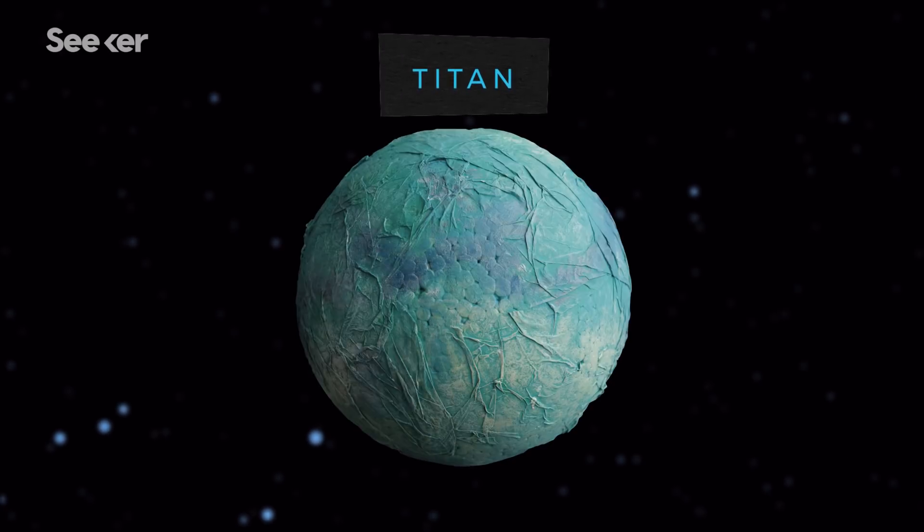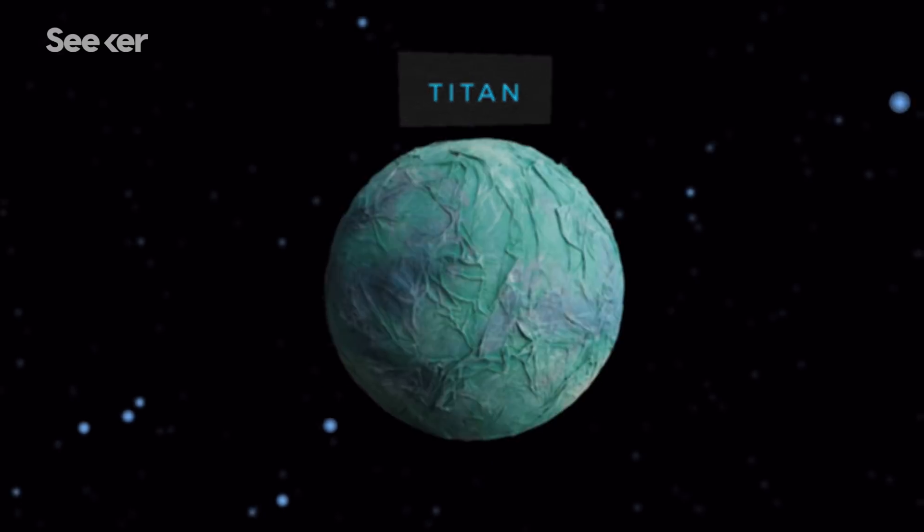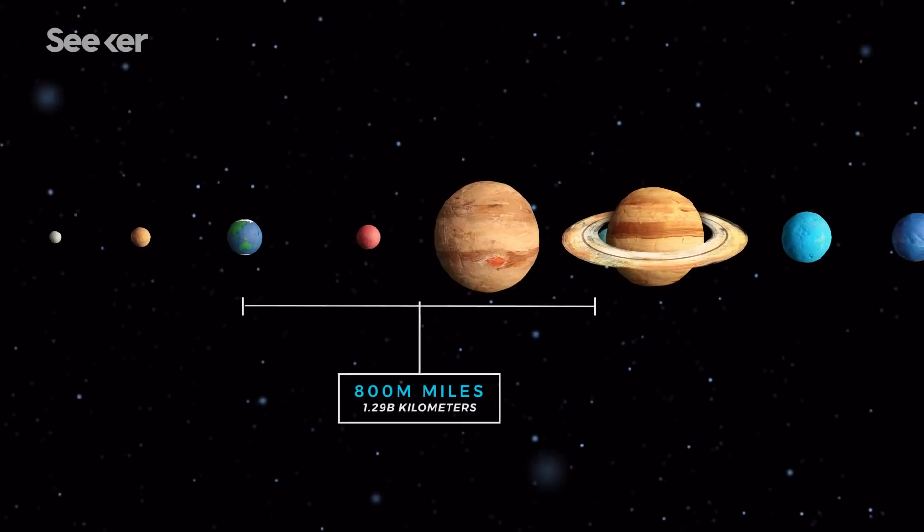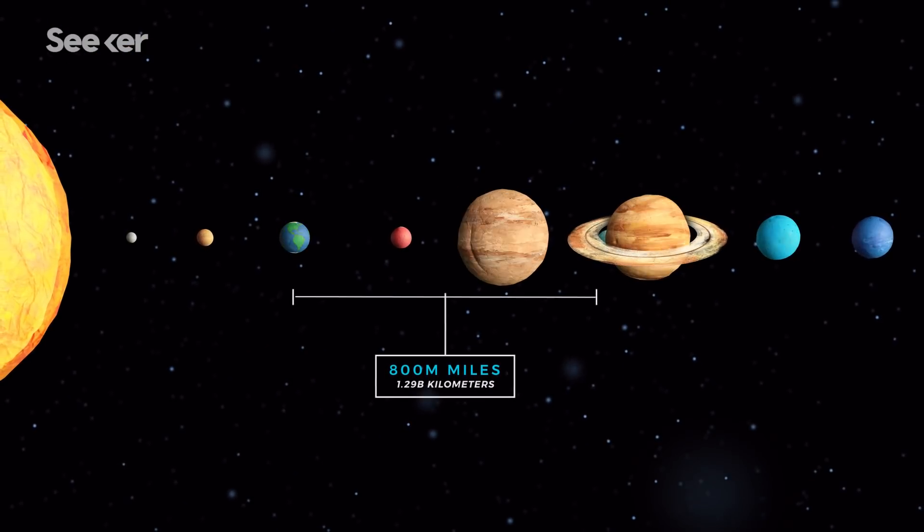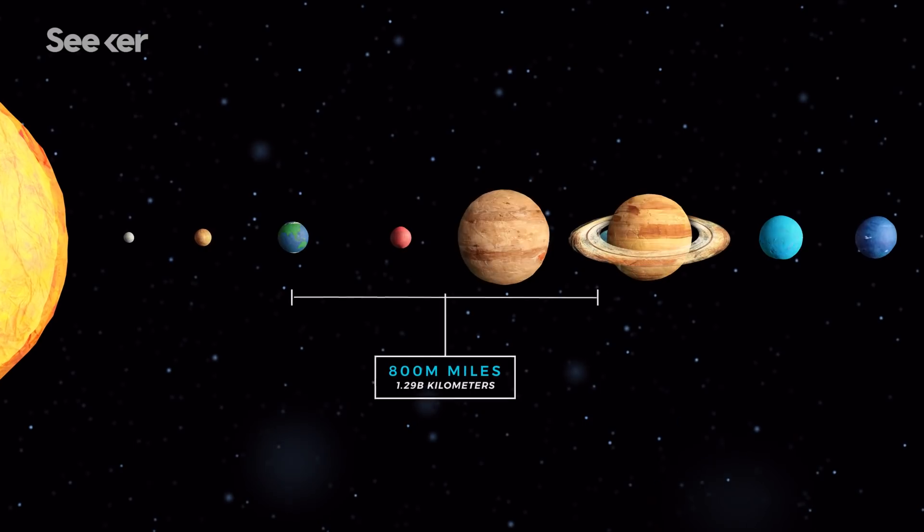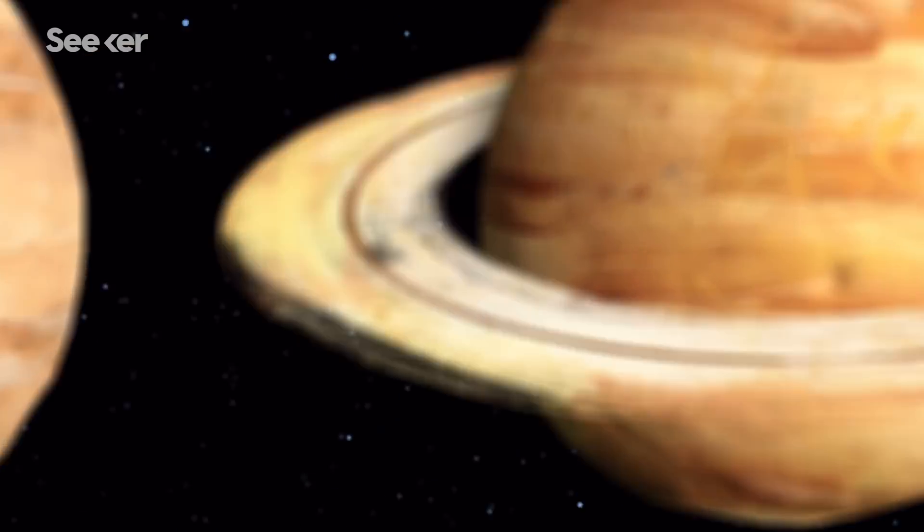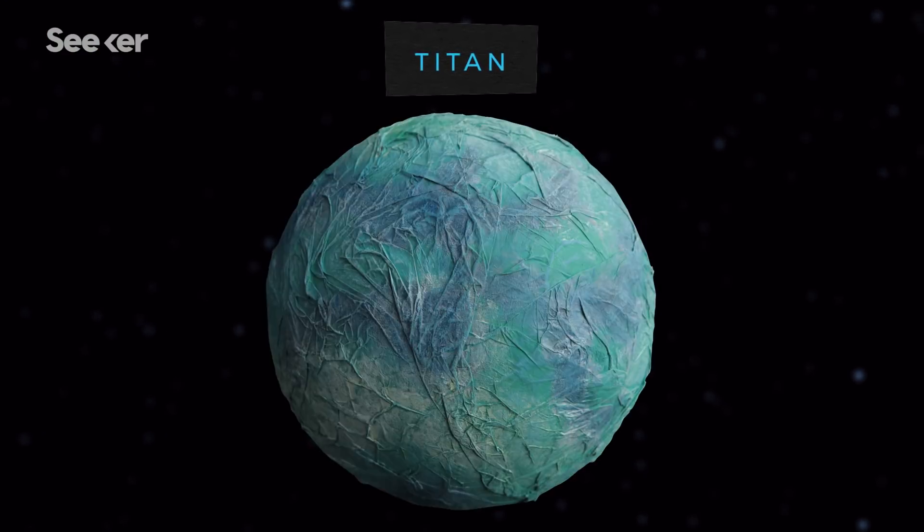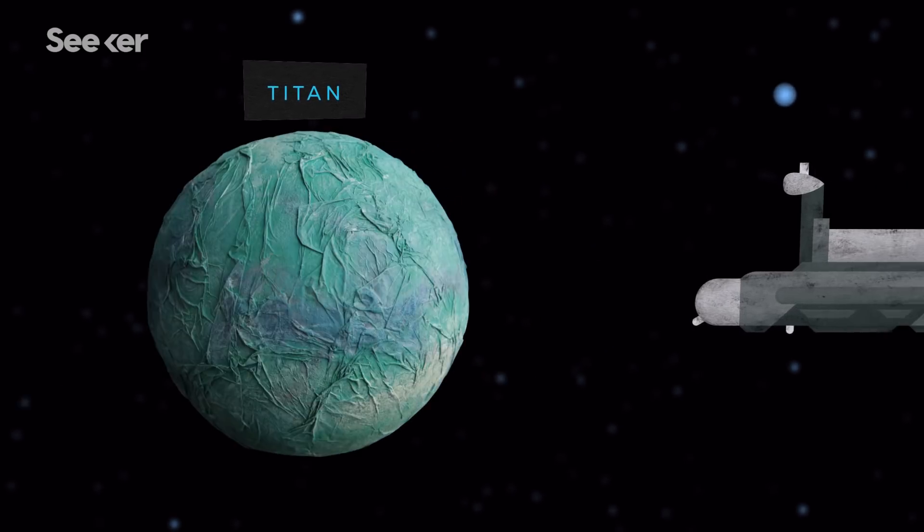This is Titan, Saturn's largest moon. Though it's 800 million miles from our planet, it's actually one of the most Earth-like places in our solar system, with a topography full of oceans and lakes. And NASA has a crazy plan to send a space submarine to explore it.